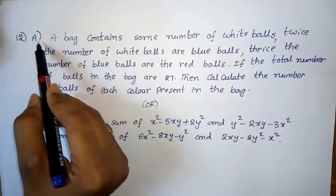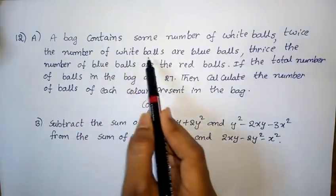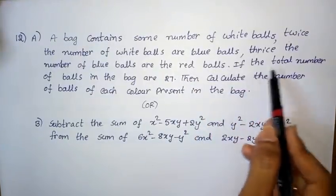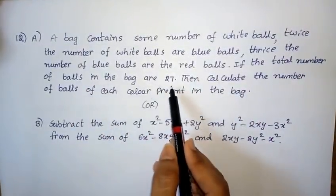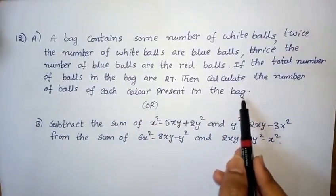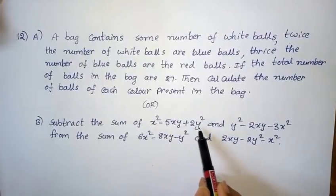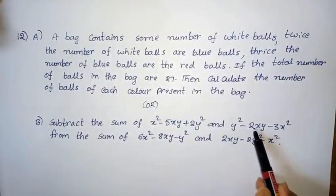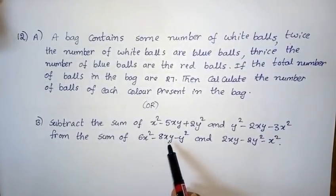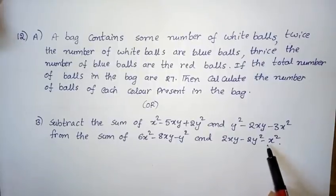Twelfth question Part A: A bag contains some number of white balls. Twice the number of white balls are blue balls. Thrice the number of blue balls are red balls. If the total number of balls in the bag is 27, calculate the number of balls of each color. Part B: Subtract the sum of (x² - xy + 2y²) and (y² - 2xy - 3x²) from the sum of (3x² - 8xy - y²) and (2xy - 2y² - x²).